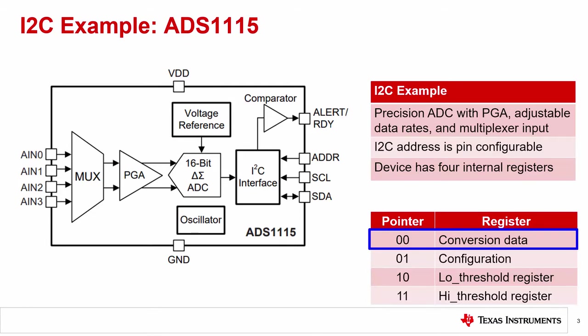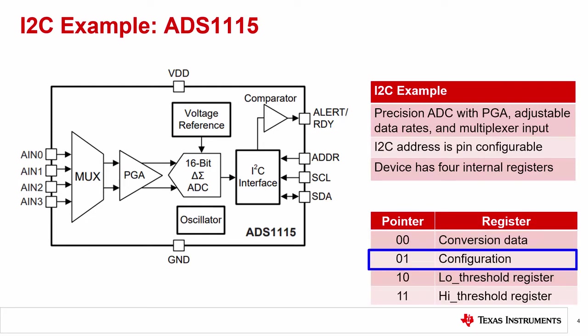The first register is the conversion data register. When the ADC completes a conversion, the ADC data is placed in this register, and the controller device reads it out from here. The second register is the configuration register. The controller device will write to this register to program the device and start a conversion. This register sets different aspects of the ADC conversion.